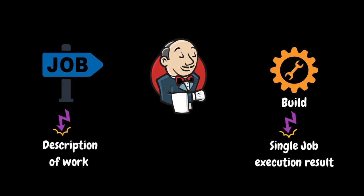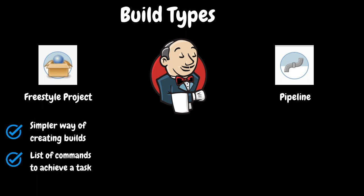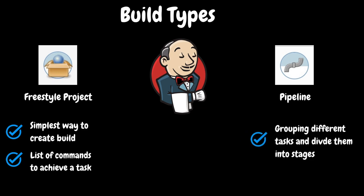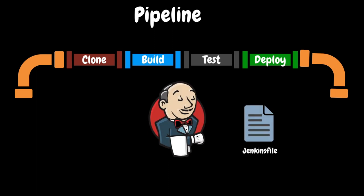Whenever Jenkins is discussed, these terms will come up very often. There are two build types that Jenkins administrators mainly use to configure jobs, and they are Freestyle Project and Pipeline. Freestyle Projects are the traditional and simpler way of creating builds in Jenkins. In a Freestyle Project, we configure the build steps in the form of a list of commands using a graphical user interface. Pipeline Projects, introduced with Jenkins 2.0, provide a way to express the entire build process as code. They are based on the Groovy scripting language and group all different tasks, dividing them into stages. Pipelines are defined in a Jenkins file which can be stored along with your source code in version control.